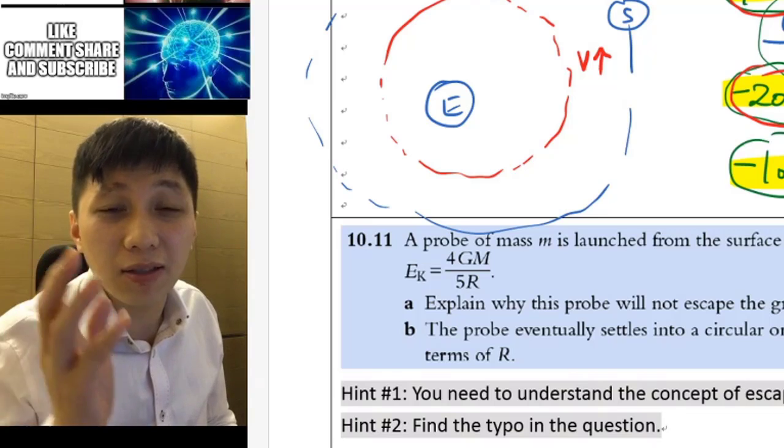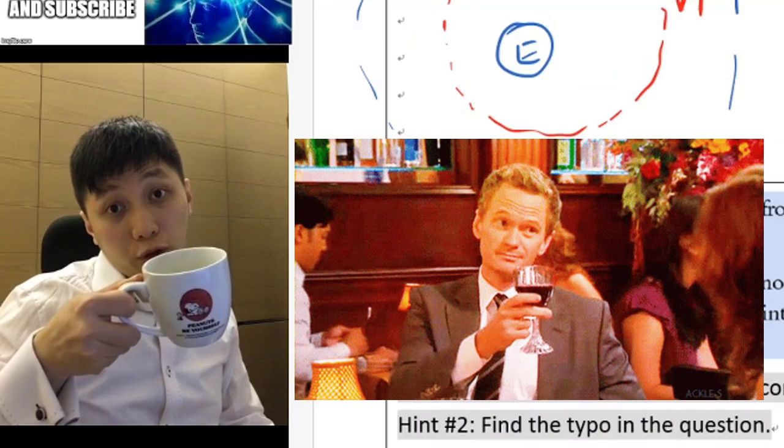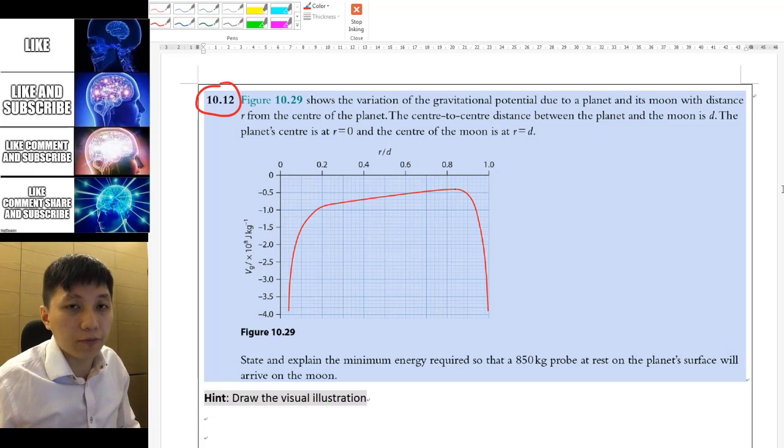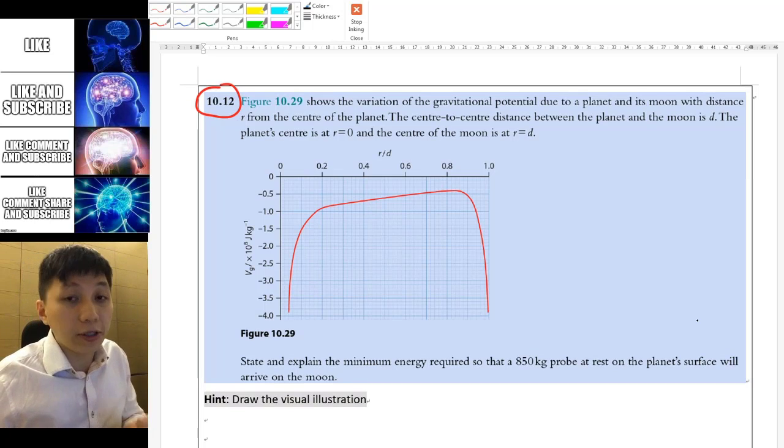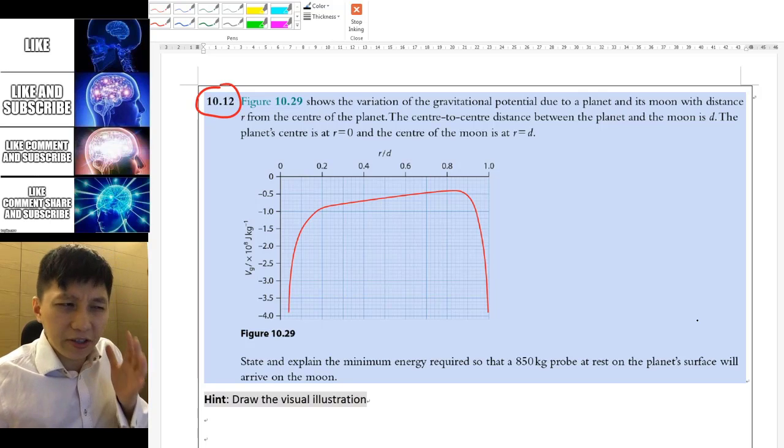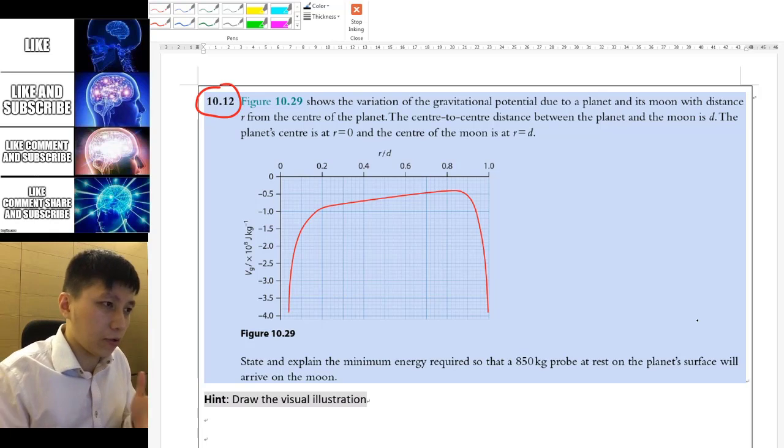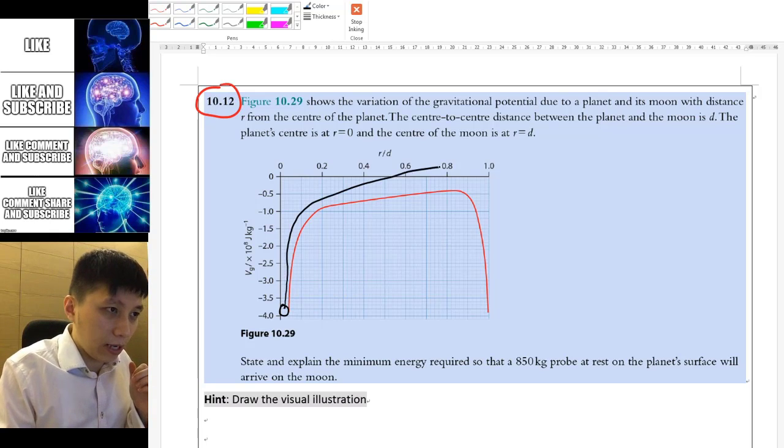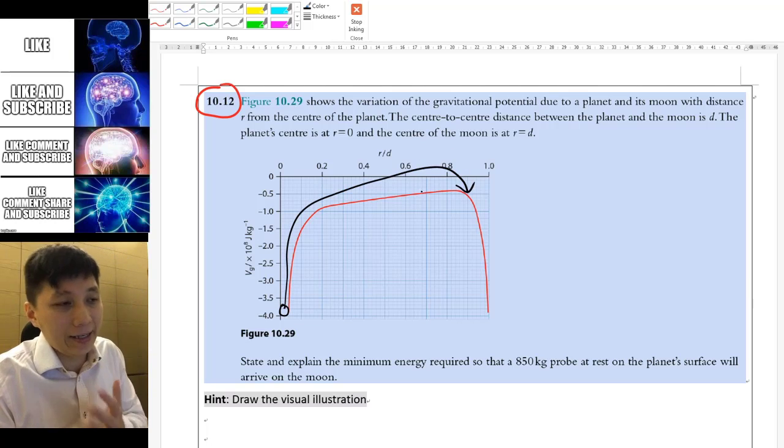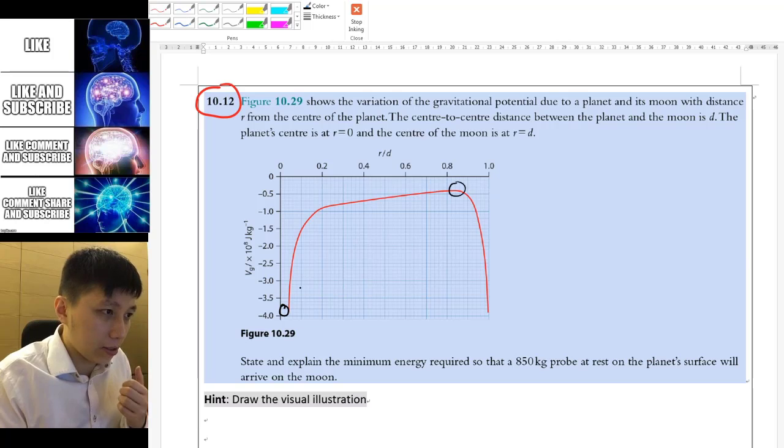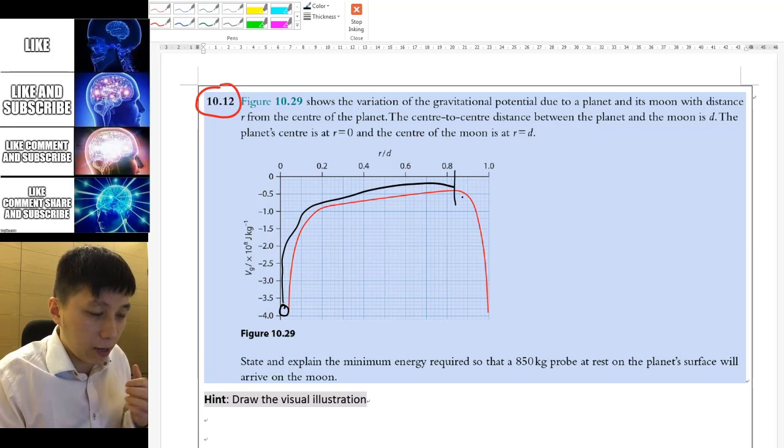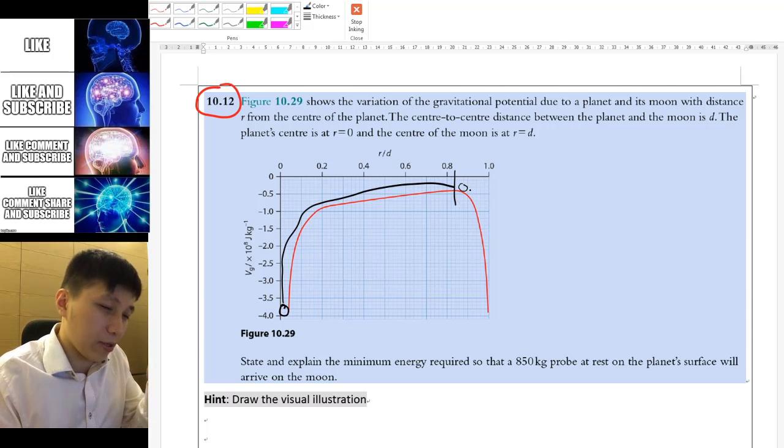So here comes our dessert, the last question. If you haven't tried yet, pause the video and try yourself. So the easiest way to handle this question is recall what I taught you earlier: treat this graph as a mountain. So if you want to launch a ball to the other side, you have to overcome its highest point. So the highest point is here. So that means the ball has to overcome this energy, has to overcome this energy and get through up to this point. And then no matter what happens, just a teeny tiny velocity will help it to go down to the other side, which is the moon in our case.